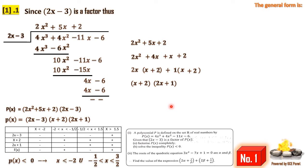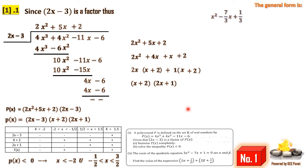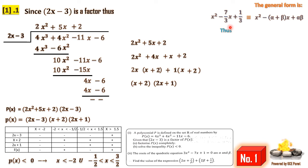For question two, the roots of 3x squared minus 7x plus 1 equals 0 are alpha and beta. We write this in the general form by dividing through by 3, giving x squared minus (7/3)x plus 1/3 equals 0. Comparing with x squared minus (alpha plus beta)x plus (alpha times beta), we get: sum of roots alpha plus beta equals 7/3, and product of roots alpha times beta equals 1/3.